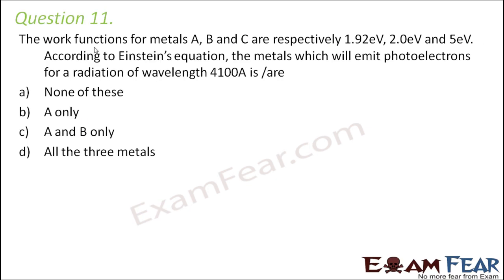Question number 11. The work functions for metals A, B and C are respectively 1.92 electron volt, 2 electron volt and 5 electron volt. According to Einstein's equation, the metals which will emit photoelectrons for a radiation of wavelength 4100 Angstrom is?